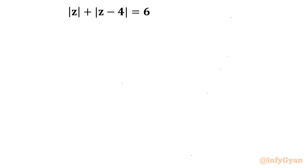Welcome to Infigyan friends. In this very exciting video on complex equations, we are going to solve one very interesting equation for the locus calculation. We have to find out what would be the locus of z. The equation is: mod z plus mod z minus 4 equal to 6. We will begin with the mathematical calculation and conclude the locus of the given complex equation. At the end of the video, we will conclude a few results.